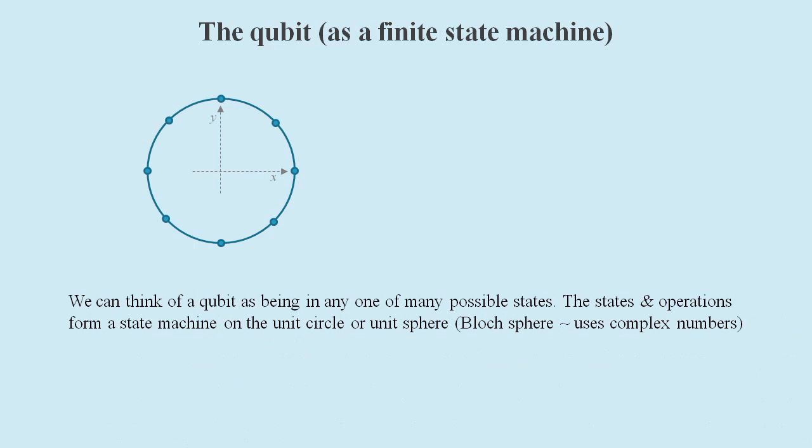So now we need to get our heads around qubits. We can think of a qubit as being in any one of many possible states. The states and operations form a state machine on a unit circle or a unit sphere, otherwise known as a Bloch sphere.